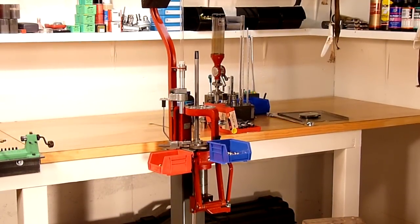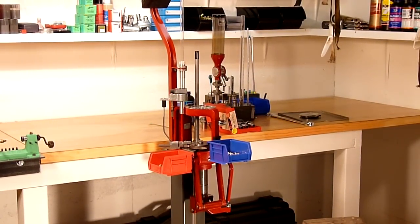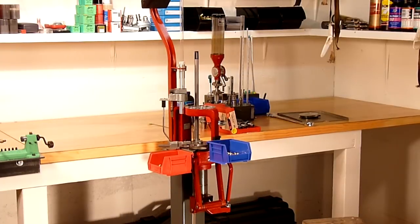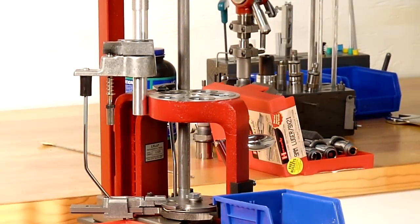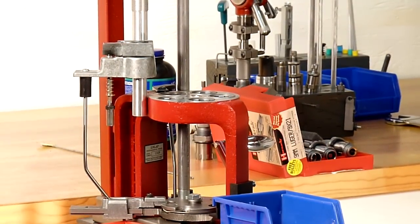In this video we're going to take a look at a very popular cartridge, the 9mm Parabellum. We're going to see what it takes to load 9mm on the Hornady Lock and Load Progressive Reloading Press.